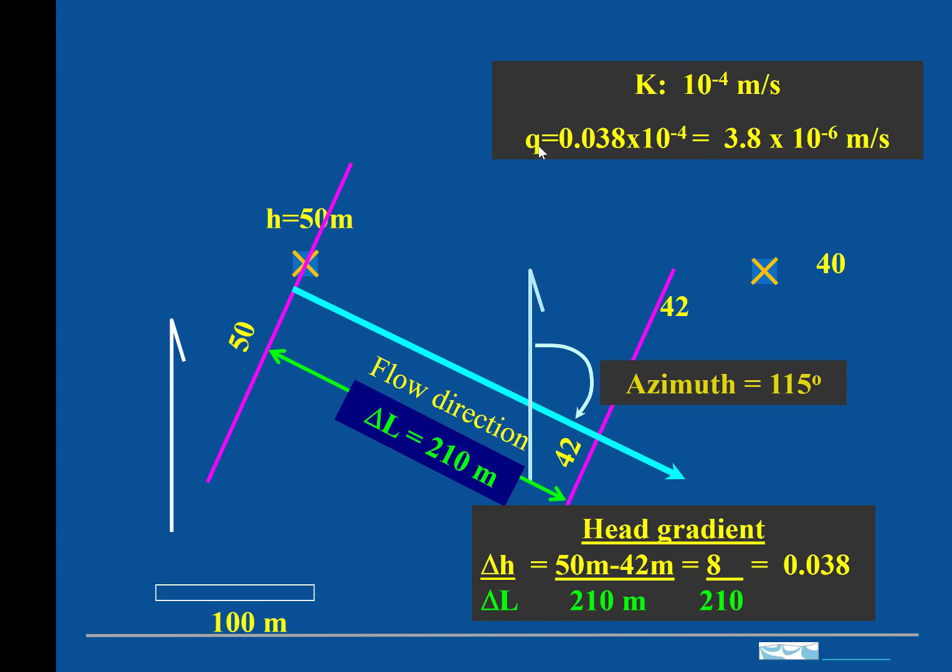then the flux is just the product here at 3.8 times 10 to the minus 6 meters per second. Okay, so that's information that we can get from these three measurements of hydraulic head.